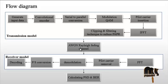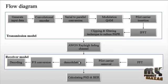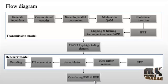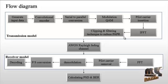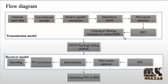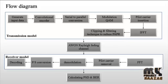The AWGN Rayleigh fading channel calculates particular values for the clipping and filtering process. Finally, the PSD — Power Spectral Density — and BER are calculated. In the clipping and filtering block, the PAPR value is reduced and calculated accordingly.